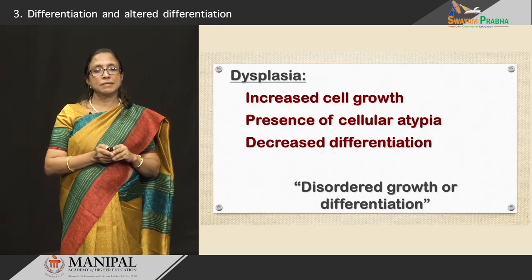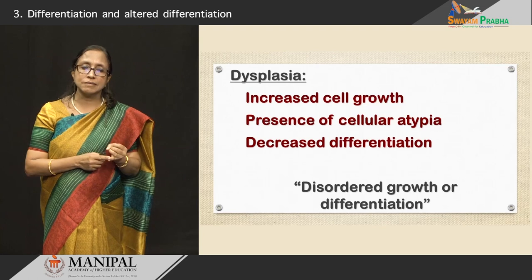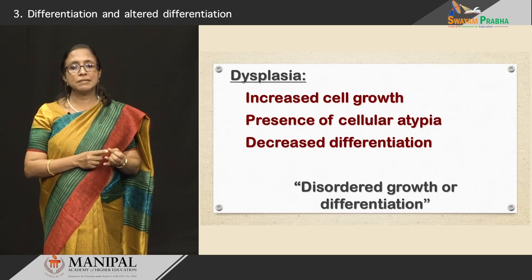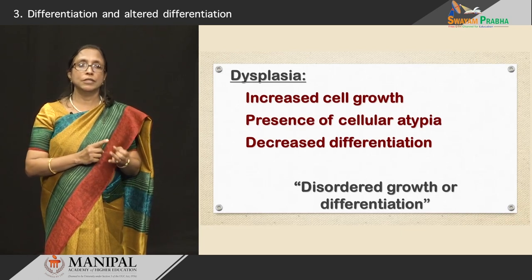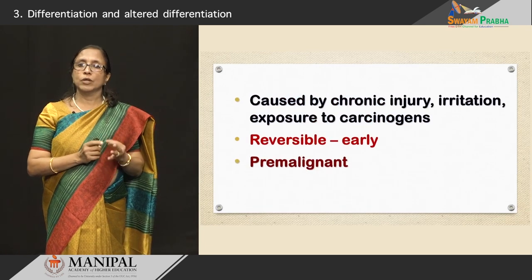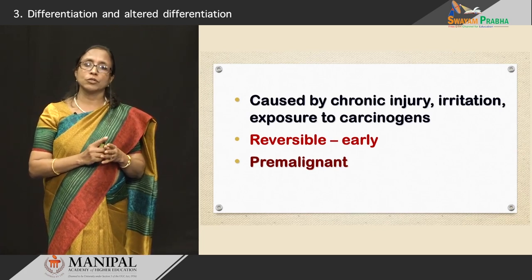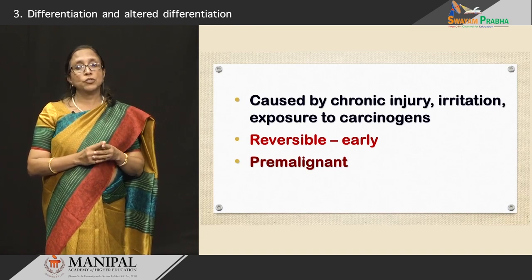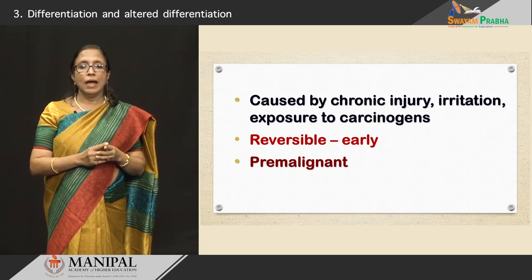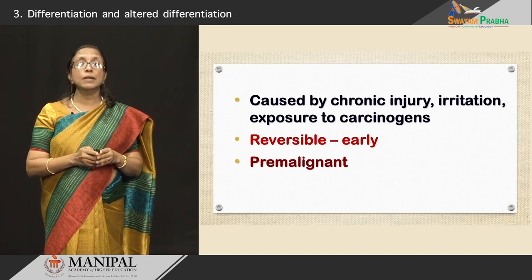Now, going on to dysplasia. The characteristic features of dysplasia are increased cell growth, cellular atypia, and decreased differentiation. It is basically an example of disordered growth or differentiation. The main reasons for dysplasia are chronic injury, irritation, or exposure to carcinogens. Very importantly, in the early stages it is reversible, but in the later stages it is irreversible and can also be premalignant.